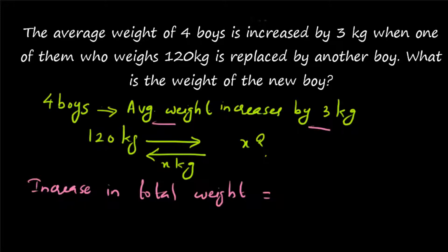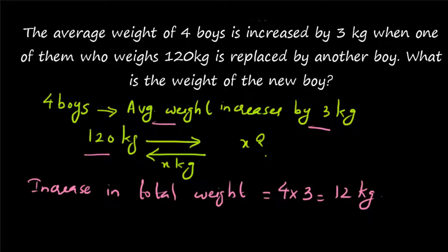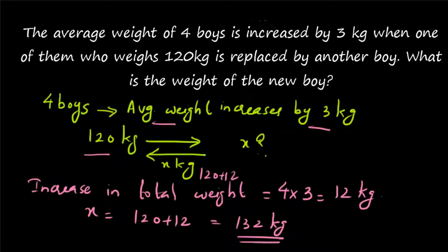Here the average weight is increasing by 3 kg. So the total increase in weight will be equal to 4 into 3, which is 12 kg. Whenever an increase or decrease in average is given, multiply it with the number of people to get the total increase or decrease. Therefore, the total weight increases by 12 kg. A boy of 120 kg goes out and a boy of 120 plus 12 kg is coming in.